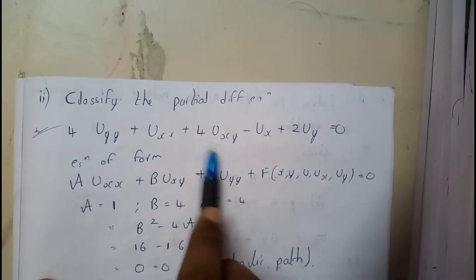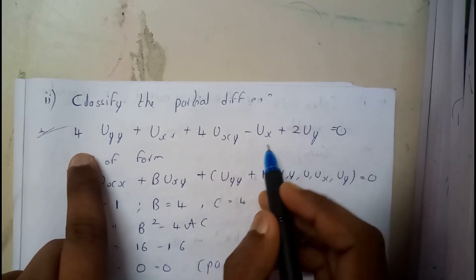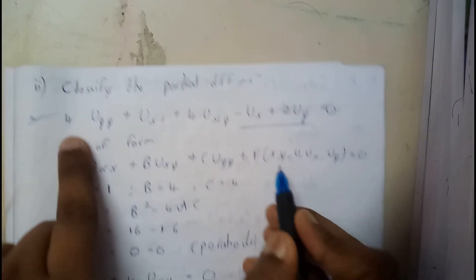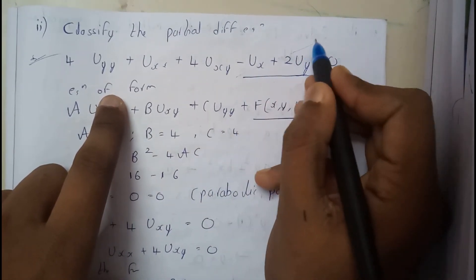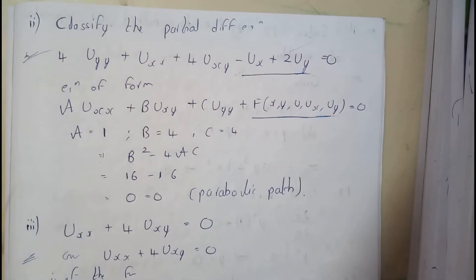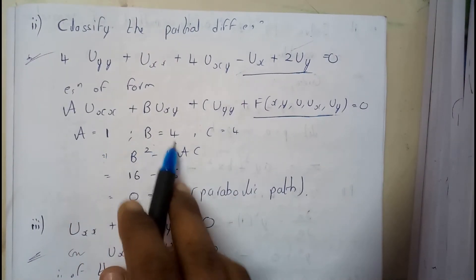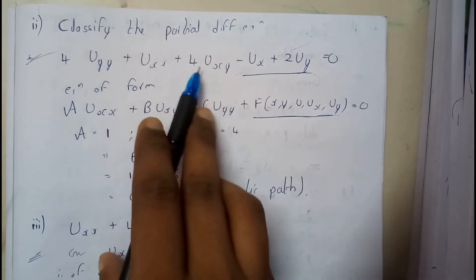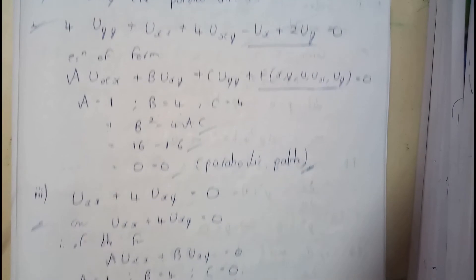Similarly, for this equation with extra terms, we can ignore those additional terms—they don't matter. Here A = 1, B = 4, C = 4. Substituting the values, we get 0, so it's in parabolic form.